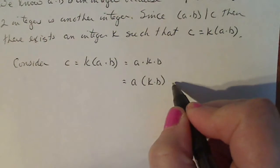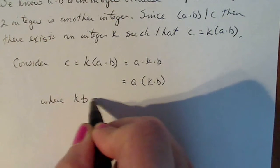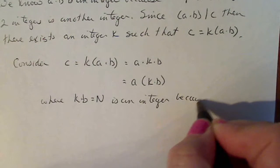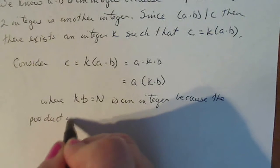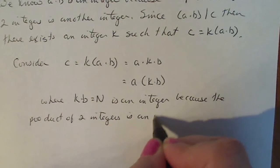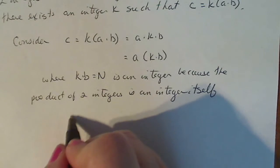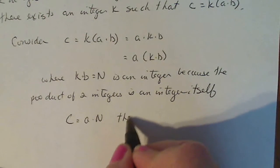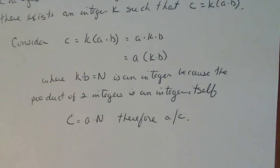And then state where k times b equals some integer n. n is an integer because the product of two integers is an integer itself. So now I have c equals a times n, therefore a divides c. I'm done with the proof.